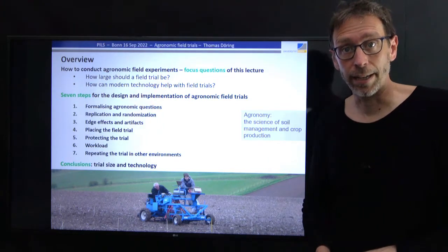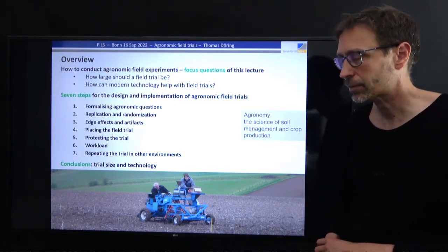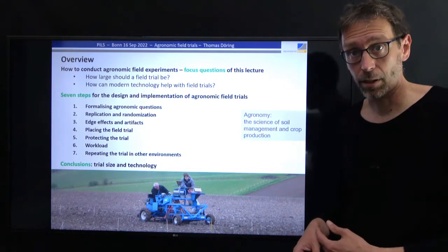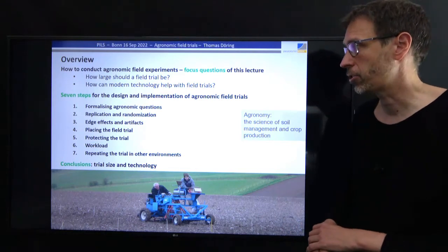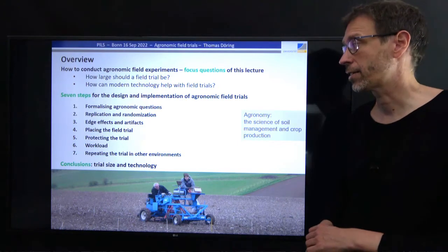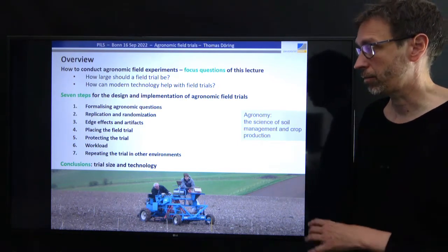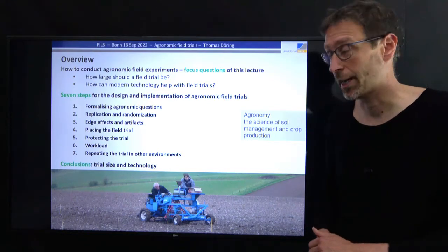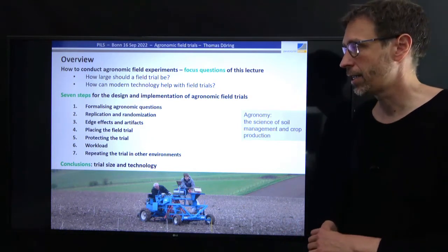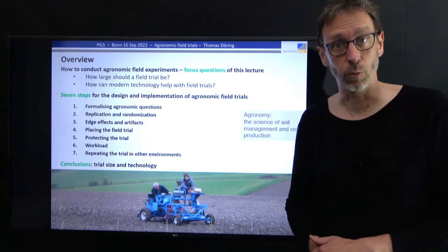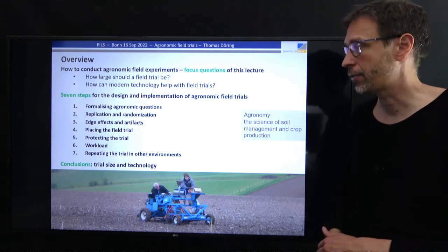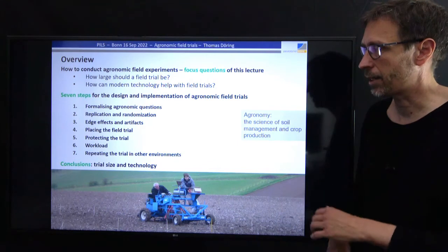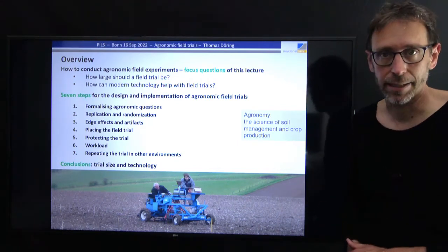First of all, we will look at the ways in which we formalize agronomic questions. Then there are a number of steps concerned with the design and potential problems of such field trials. We will look at replication and randomization, at potential difficulties arising from edge effects and artifacts. We will need to place the trial in a field, protect it from damage through weeds or birds, consider the workload, and finally look at the need to repeat the trial in other environments. I'm going to come back to these focus questions about trial size and the help of technology.